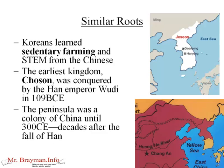The earliest of those kingdoms was called Chosun — you'll notice the spelling varies in this lesson because of the different alphabet and letter system. Chosun, or Joseon, was conquered by the Han Emperor Wu Di in 109 BCE. So even from the middle part of the Han period, Korea was a periphery state to China. The peninsula was a colony of China for another 400-some years, even decades after the fall of Han. The northern half of Korea was considered Han territory.